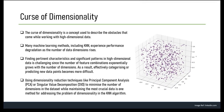Now let's understand the curse of dimensionality. This is a term used to describe the challenges that arise when working with high-dimensional data — a phenomenon where the performance of many machine learning algorithms, including KNN, degrades as the number of dimensions in the data increases. In high-dimensional data, the number of possible feature combinations increases exponentially. As a result, it becomes harder to accurately classify or predict new data points, and the data becomes more sparse, making it harder to identify similar points and cluster them together.